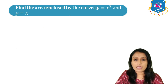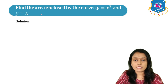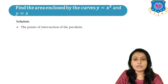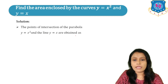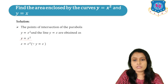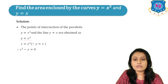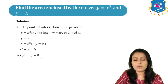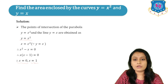Now let's study one example: find the area enclosed by the curves Y = X² and Y = X. This example is given in Cartesian coordinates. The points of intersection of the parabola Y = X² and the line Y = X are found by substituting Y = X into Y = X², giving X = X². Rearranging: X² − X = 0, so X(X − 1) = 0, giving X = 0 and X = 1.